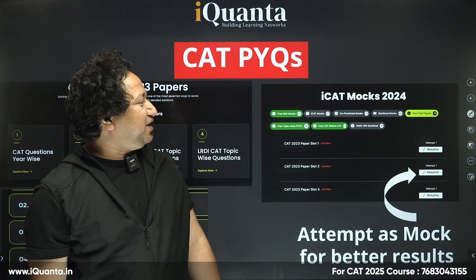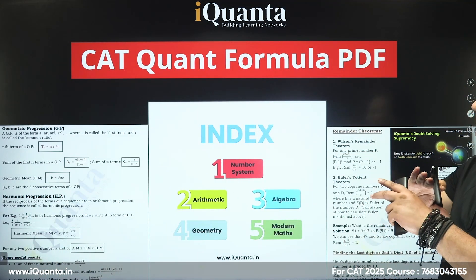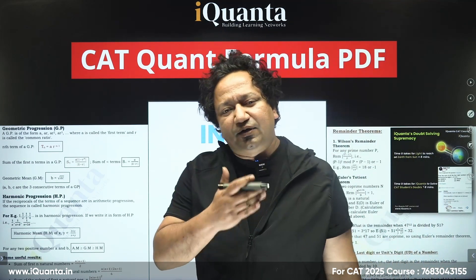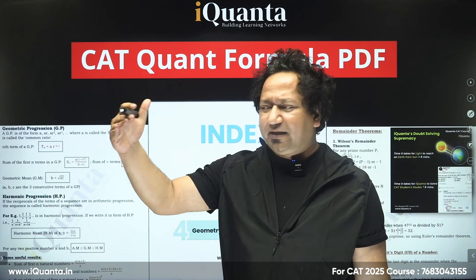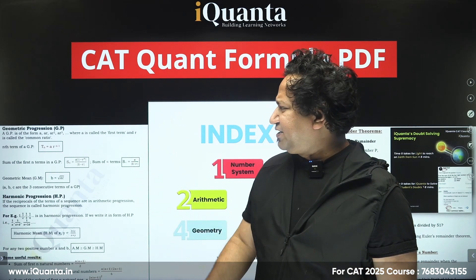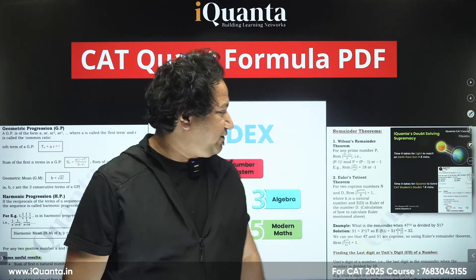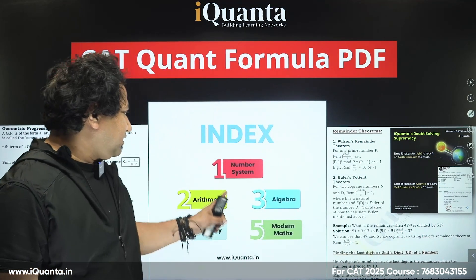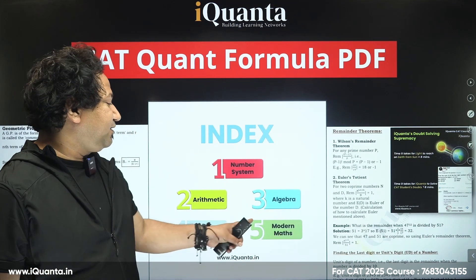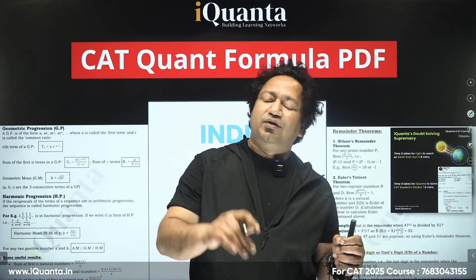Apart from that, we have made a Quant Formula PDF in which different formulas of quantitative aptitude are covered — starting from arithmetic, then going to algebra, geometry, numbers, permutations, combinations, GP, harmonic progression, remainder theorems, and so on. The index covers: number system, arithmetic, algebra, geometry, and modern maths. It's a free downloadable PDF provided on iQuanta's website.